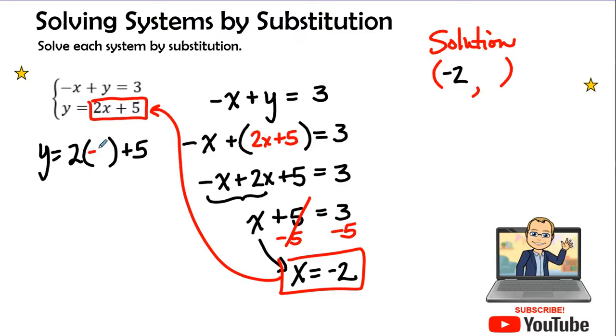So here we go. Let's plug in a negative 2 for the variable x. So now we have y equals 2 times a negative 2 is a negative 4. And a negative 4 plus 5, we can see that a negative 4 plus 5 or 5 minus 4 is going to give us 1. So here's our y value for our solution. So in this problem, the solution where the two lines intersect is negative 2, 1.